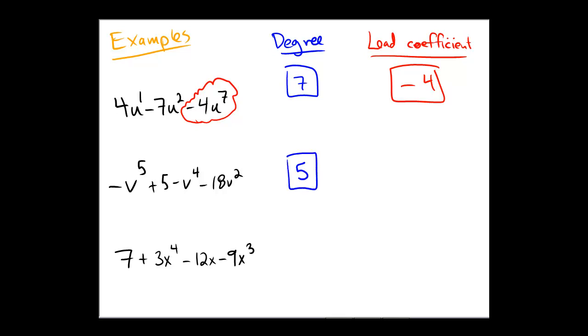Leading coefficient: find the degree five term, put a bubble around it if you wish. The coefficient to this is a negative sign the way it looks, but remember there's a hidden one right there. So this is really negative one times v to the fifth, and thus our leading coefficient is the number negative one.